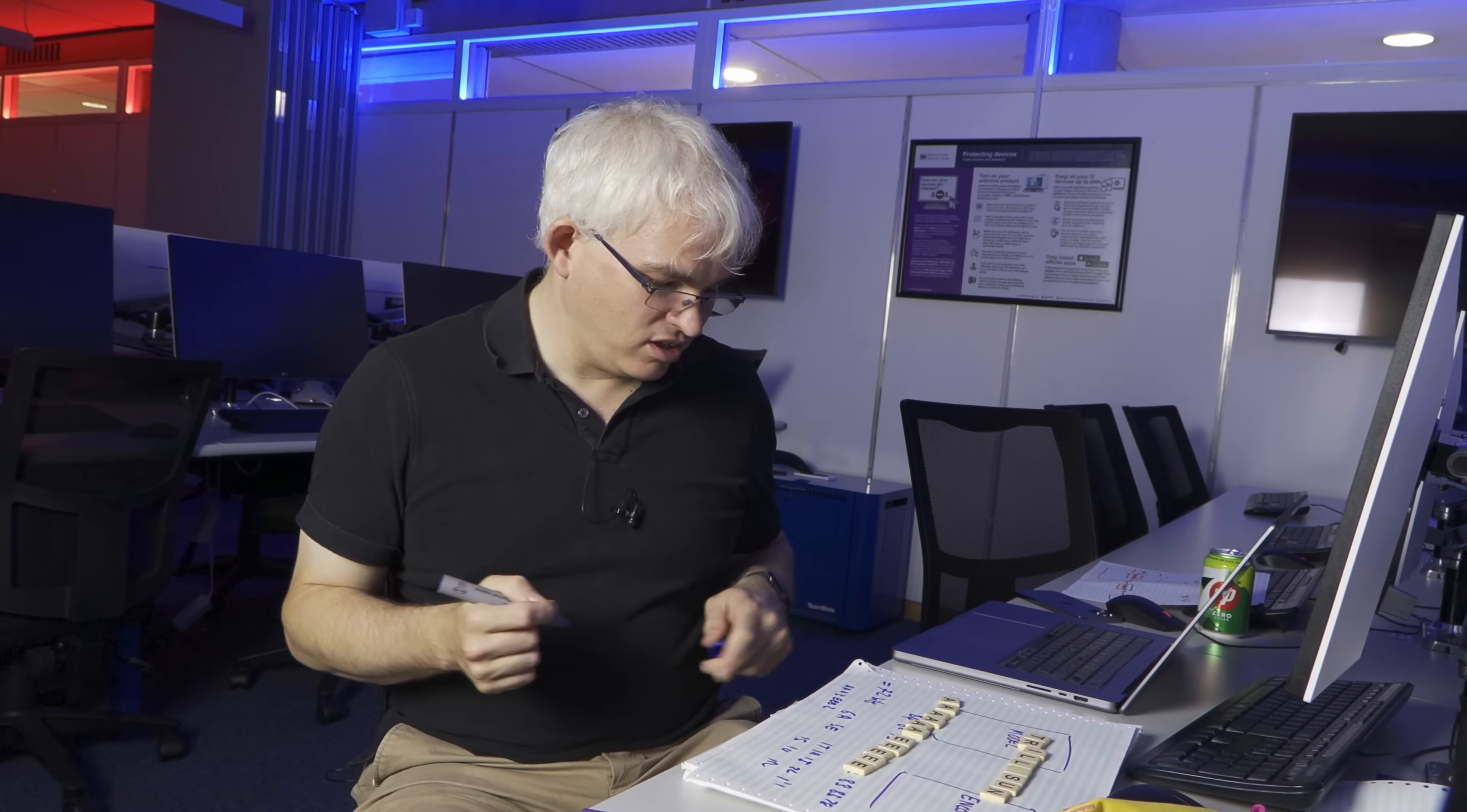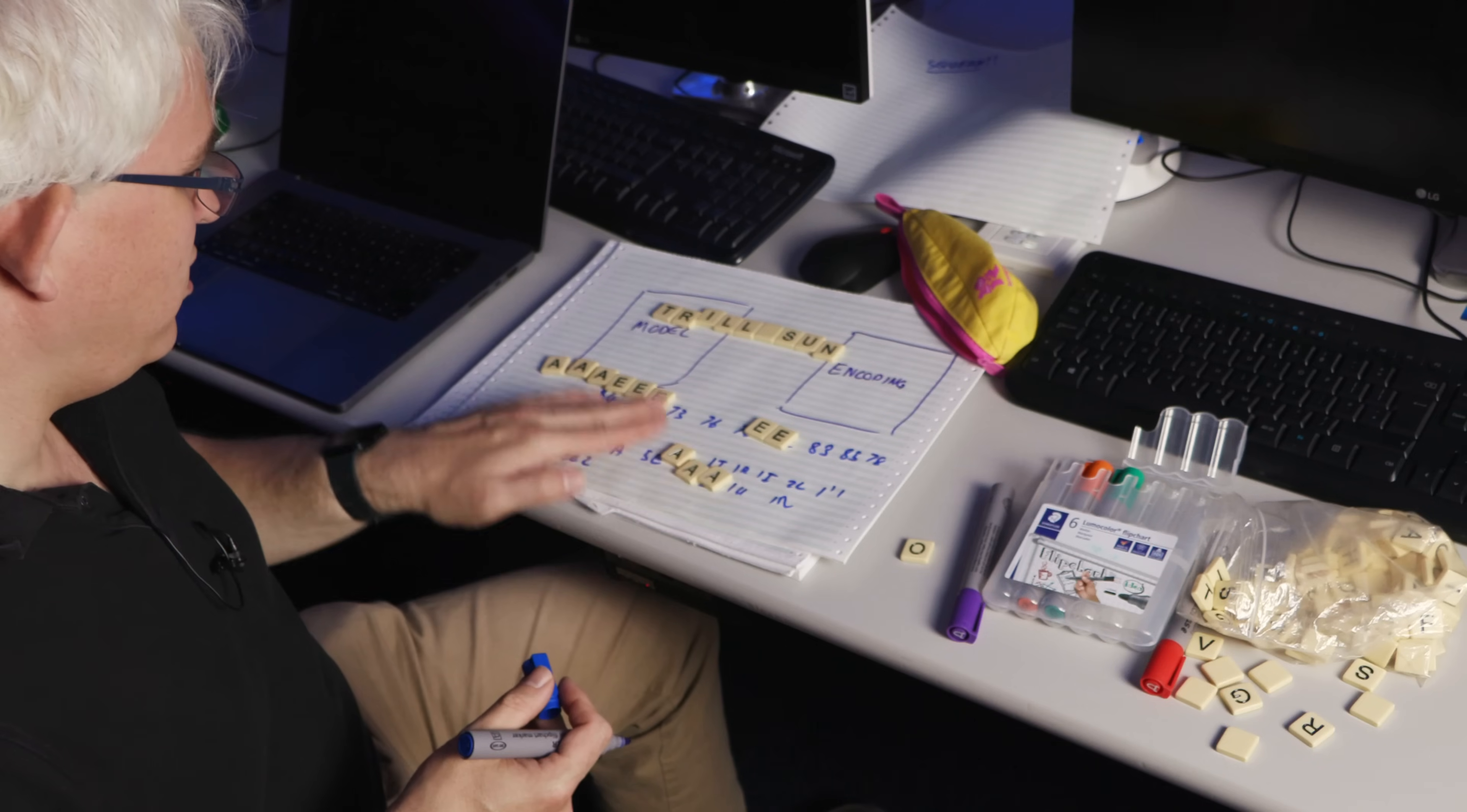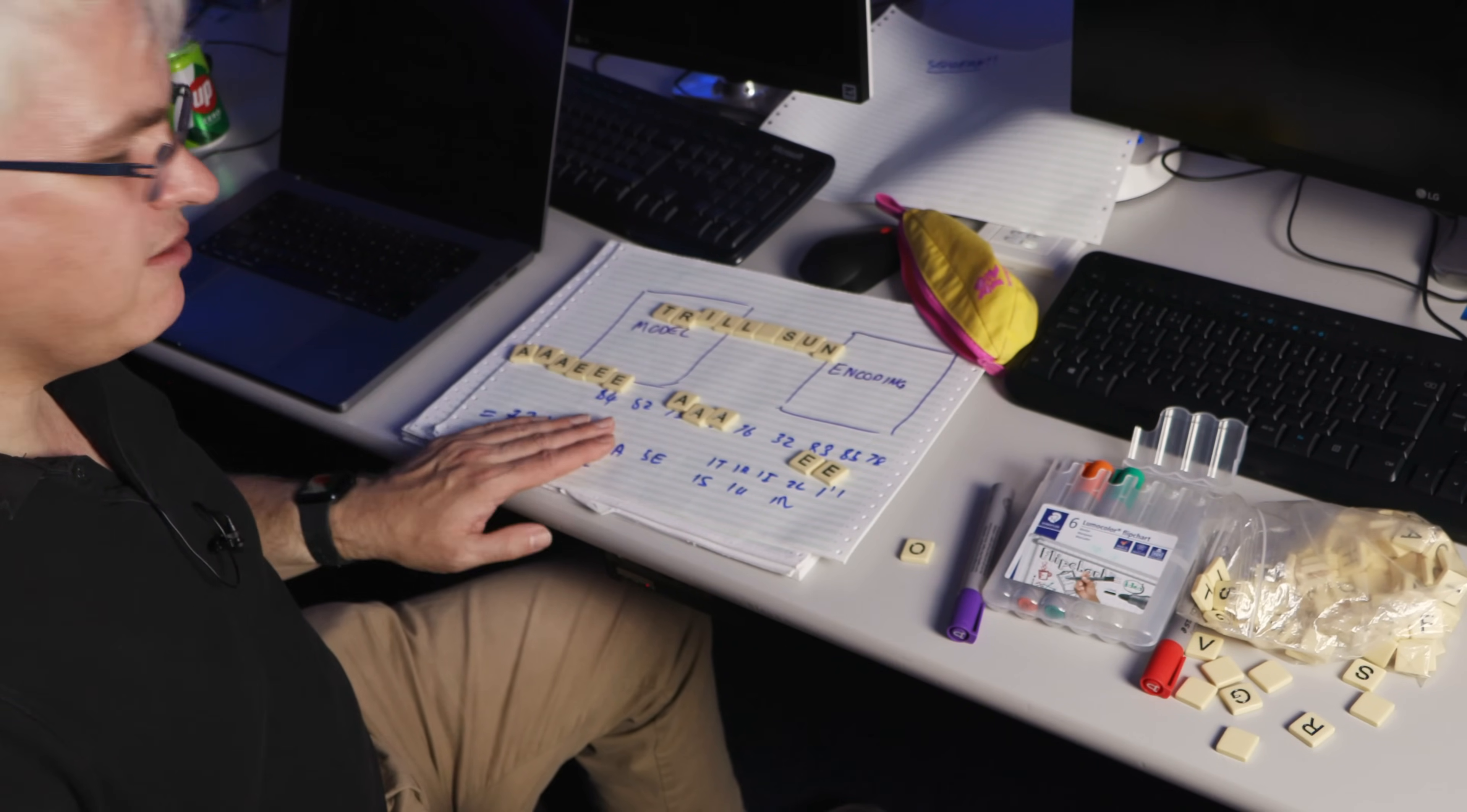Of course, if we end up with A, A, A, E, E, E, A, A, E, E, E, then what you end up with is it being encoded as A, A, A, 0, E, E, E, 0, A, A, A, 0,